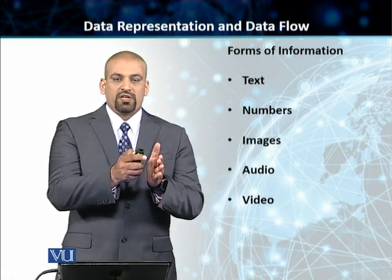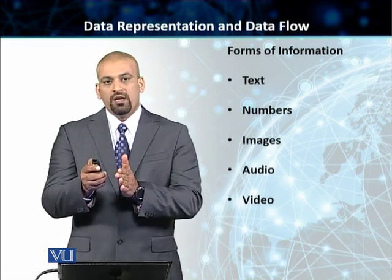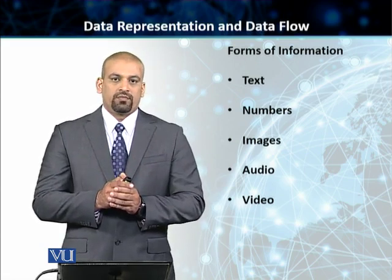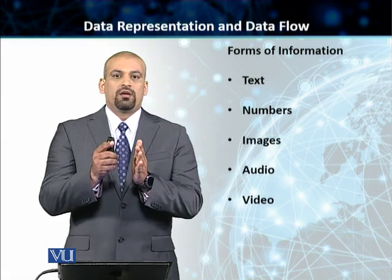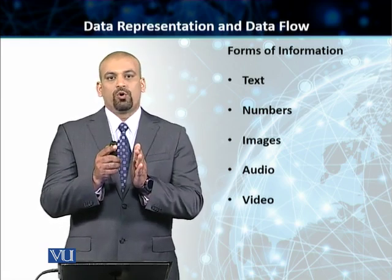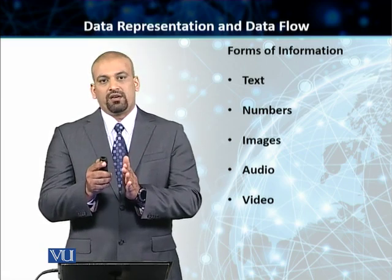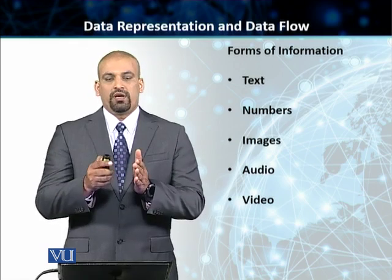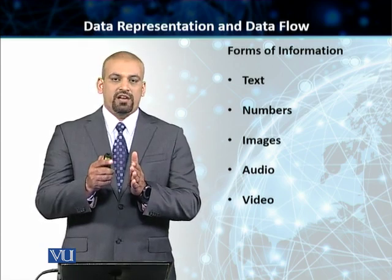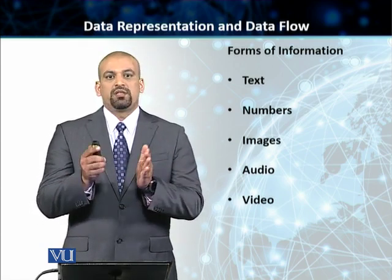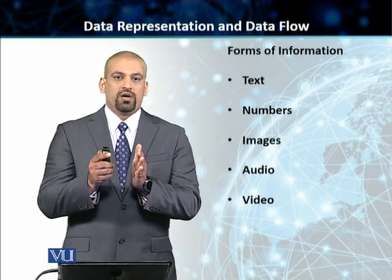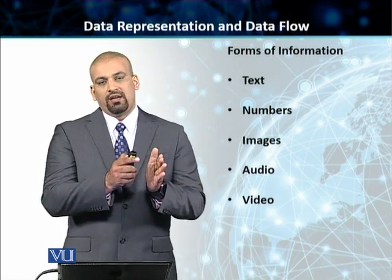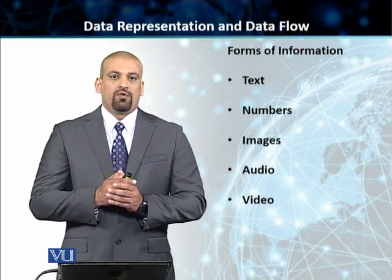A bit pattern is transmitted from point A to point B using a system of code called Unicode. Unicode is a 32-bit coding system that we use to code every single character and every single symbol. Unicode comes from our ASCII standards of coding, and it governs how we convert every single character into a bit pattern and get it transmitted from point A to point B.